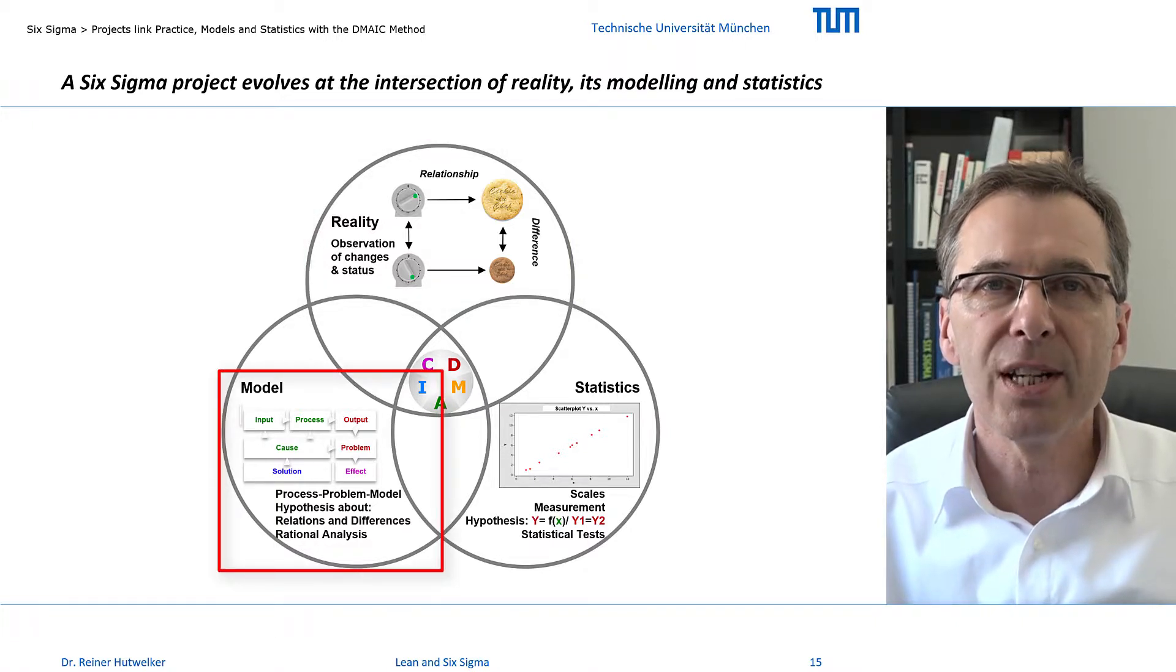In the process model, the cookies are mapped as outputs and the timer as an influential resource in the process.